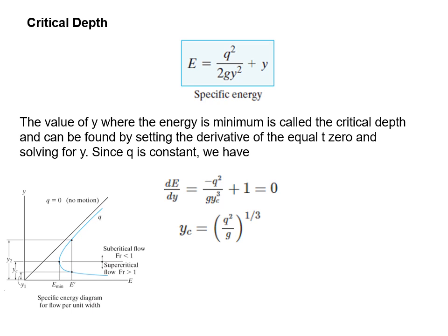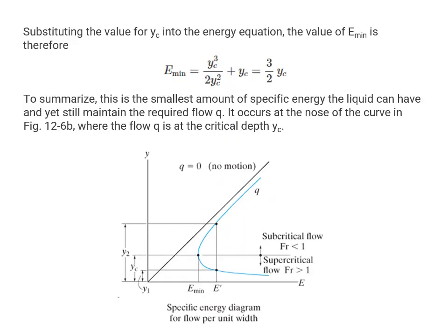Given the specific energy equation, we can find the minimum energy shown in the diagram using the first derivative test — taking the derivative of the specific energy equation with respect to Y, keeping Q constant, and solving for Y. The critical depth is given by the resulting equation. Substituting this critical depth Yc into the energy equation gives the minimum energy value of three-halves times Yc. This is the smallest amount of specific energy the liquid can have and still maintain the required flow Q. It occurs at the nose of the curve at the critical depth Yc.